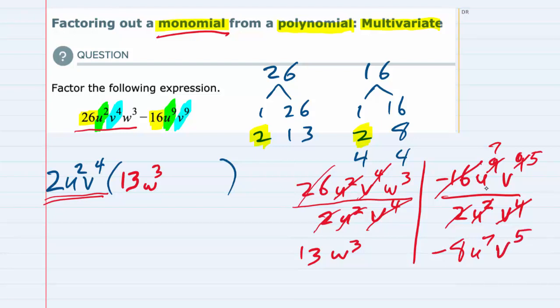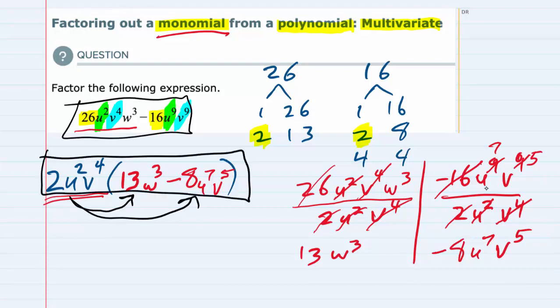So my second term is minus 8u⁷v⁵. We have factored out the monomial. To check our answer, we could distribute that outer term back to each of those inner terms. And we should end up back at our original expression. So this is our expression with the monomial factored out.